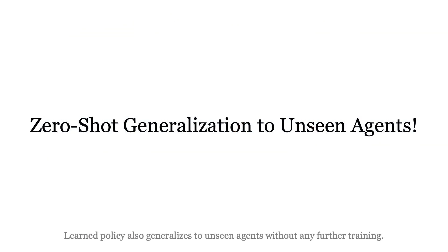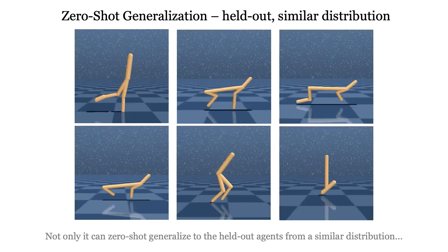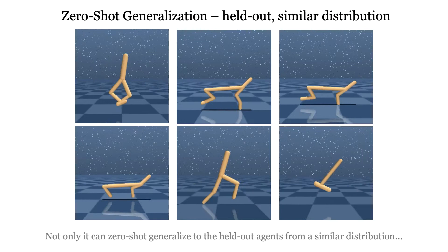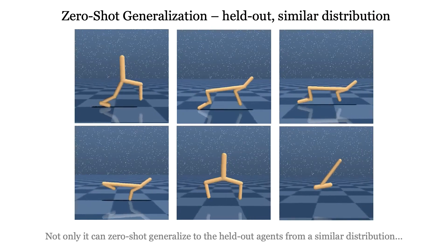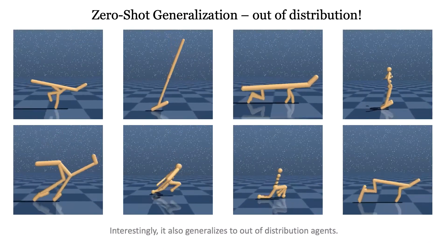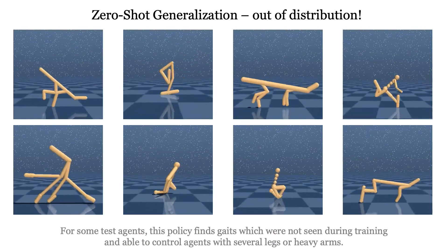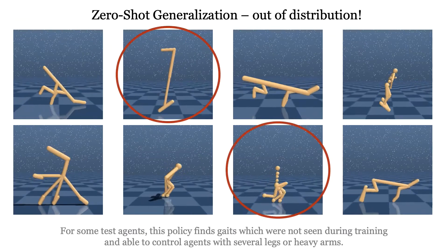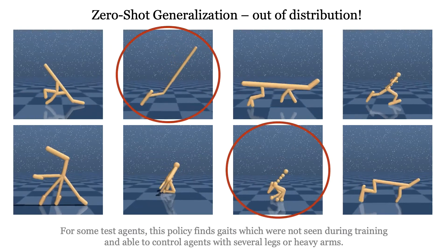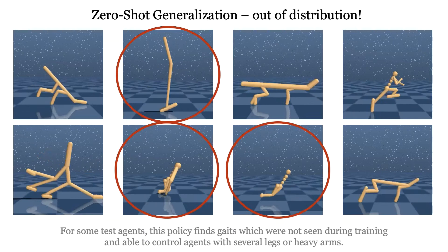The learned policy also generalizes to unseen agents without any further training. Not only can it zero-shot generalize to held-out agents from a similar distribution, but interestingly, it also generalizes to out-of-distribution agents. For some test agents, the policy finds gaits which were not seen during training, and is able to control agents with several legs or heavy arms.